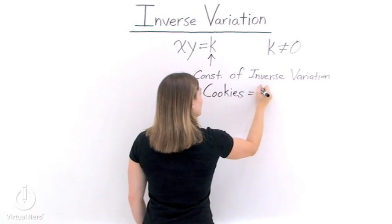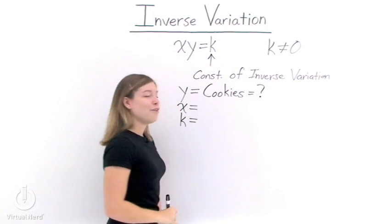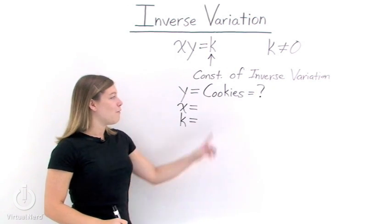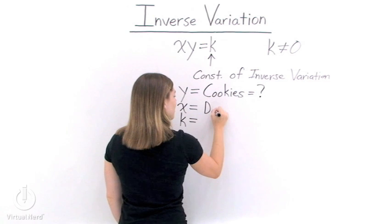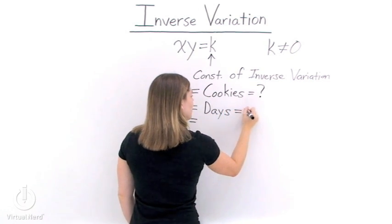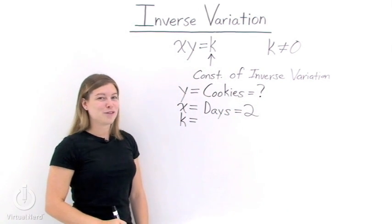And since we don't know this number, that will be our unknown variable that we need to solve for. So if y is the number of cookies, then x needs to be the number of days. And we were given that John has been dieting for two days. So x equals 2.